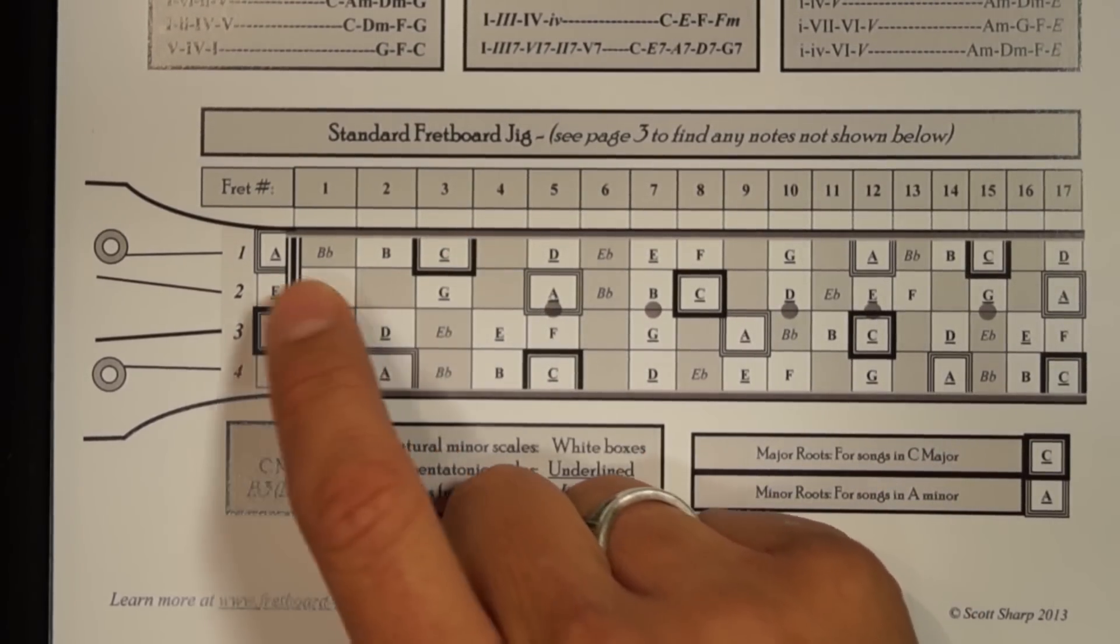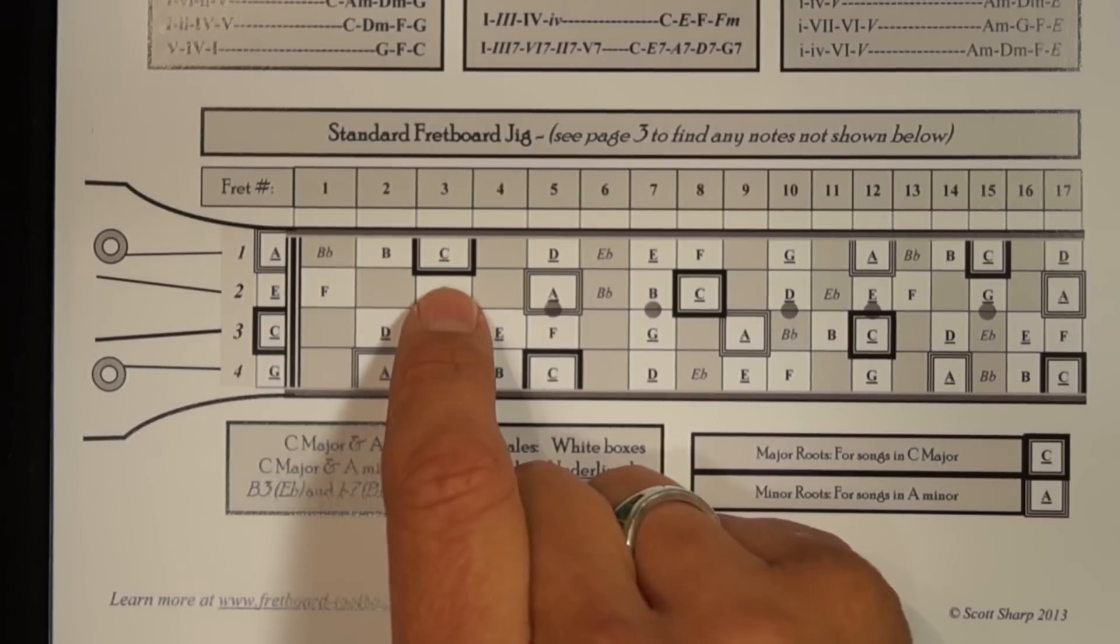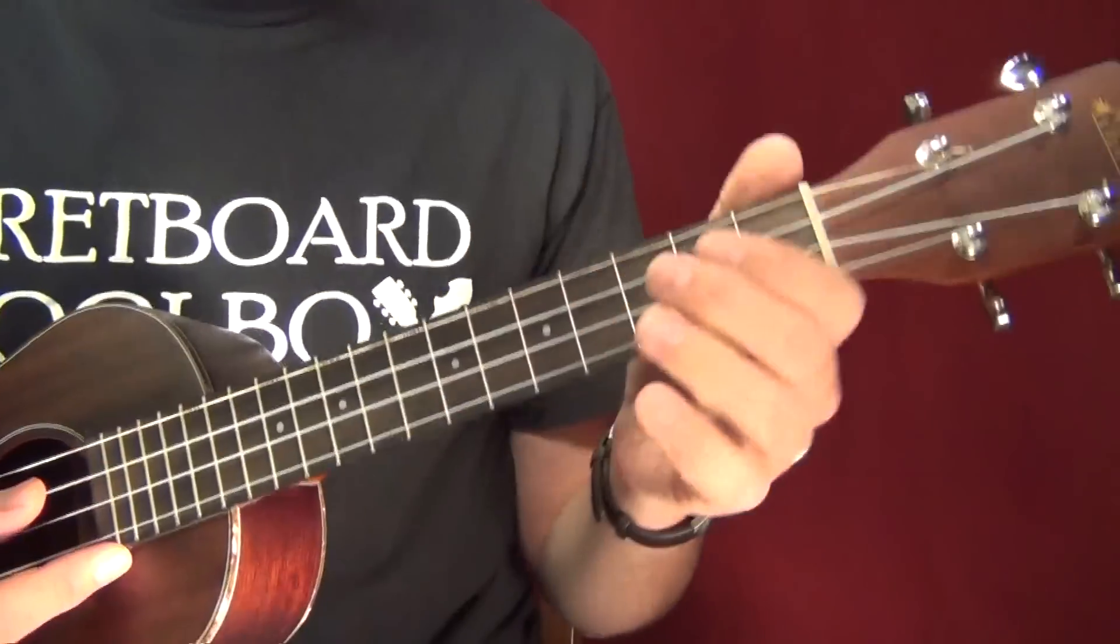So if I wanted to run from C to C again using only pentatonic notes, I would go C, D, E, G, A, C. So that's open, second, open, third, open, third.